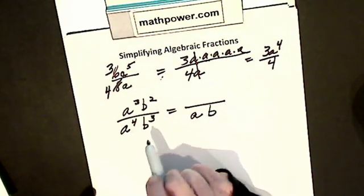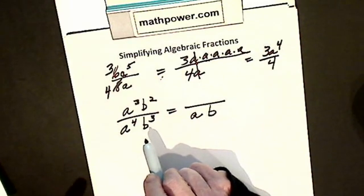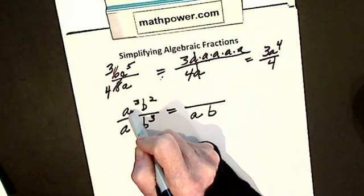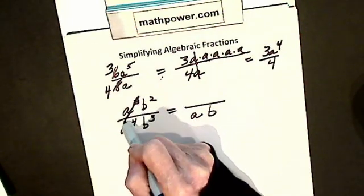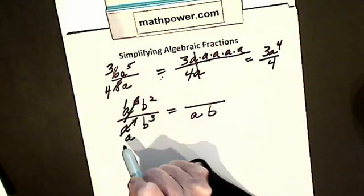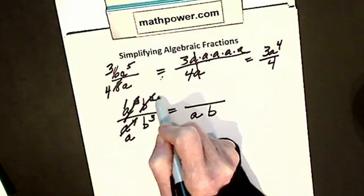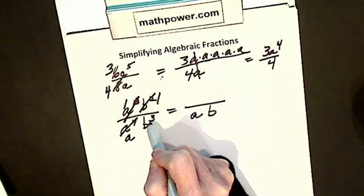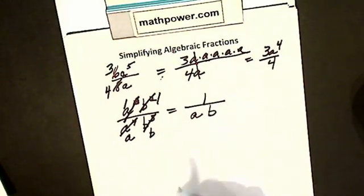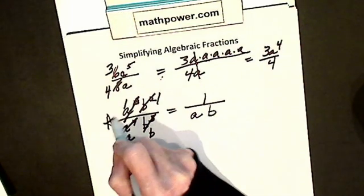We are going to cancel so much that we don't bother putting the ones, but it is really a cubed into a cubed 1, a cubed into a 4th a, b squared into b squared 1, b squared into b cubed b. So if I have a denominator, it has to stay a denominator. This is a big deal.